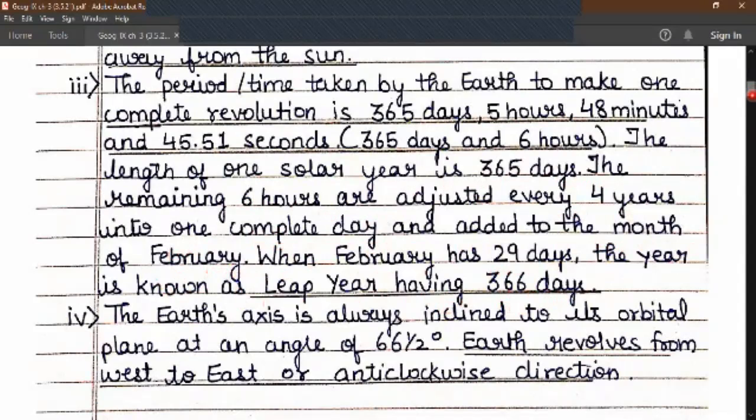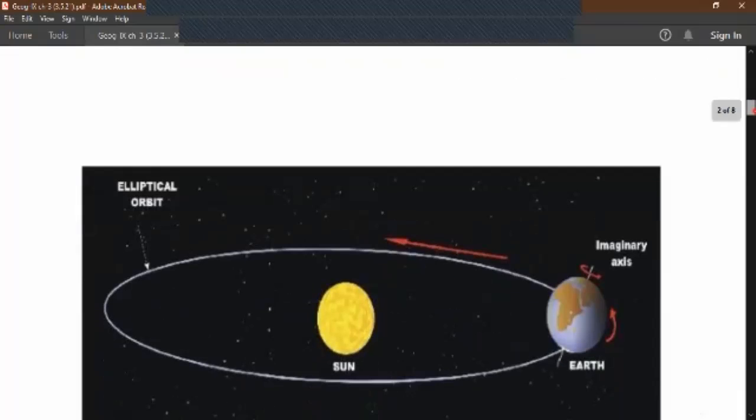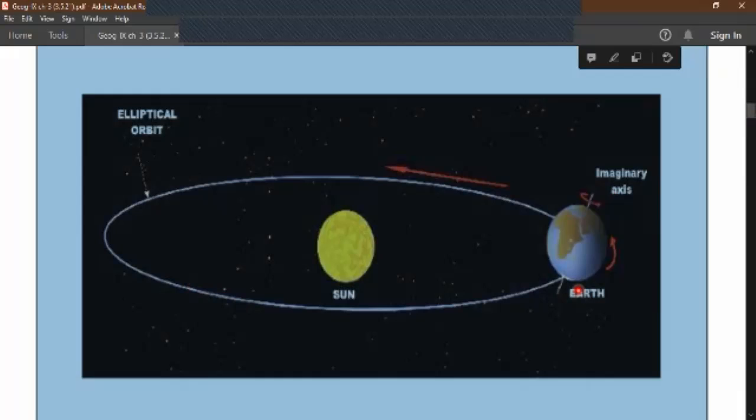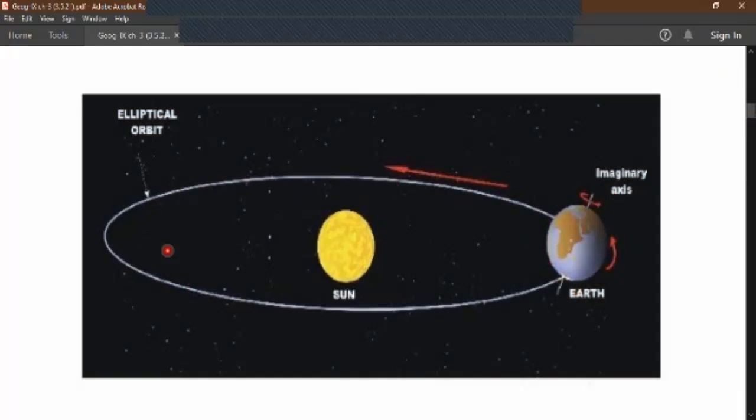Number four: the earth's axis is always inclined to its orbital plane at an angle of 66 and a half degrees. That has been discussed last time in the last session. Earth revolves from west to east direction or anti-clockwise direction. So this is the direction of earth's movement around the sun, anti-clockwise or from west to east.